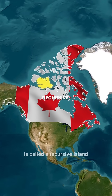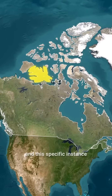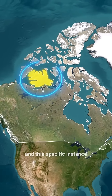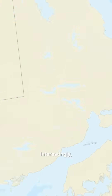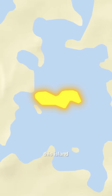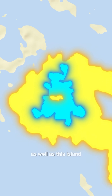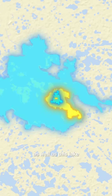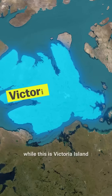This rare phenomenon is called a recursive island, and this specific instance is considered the largest. Interestingly, this island does not even have a name, as well as this lake, as well as this island, as well as this lake, while this is Victoria Island.